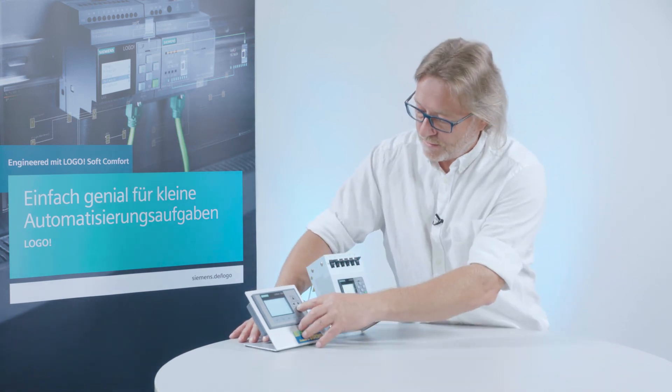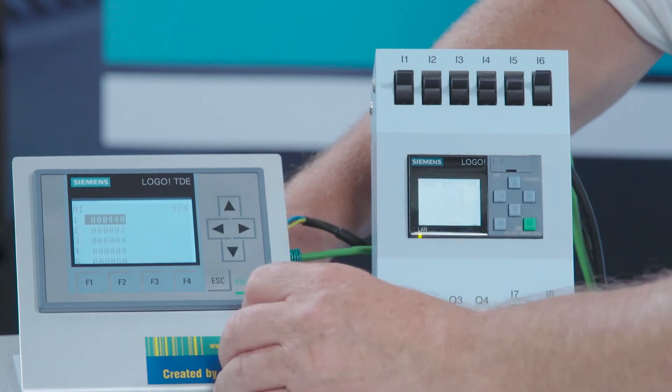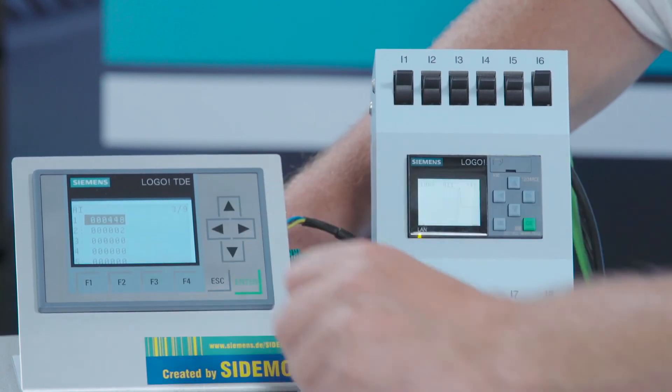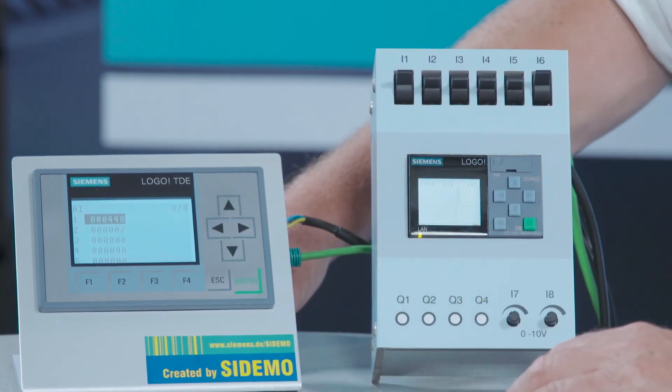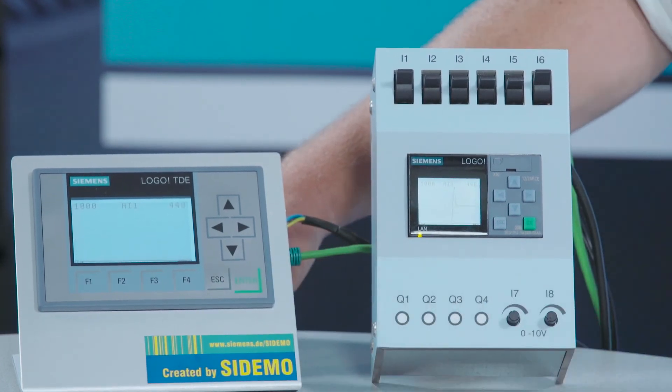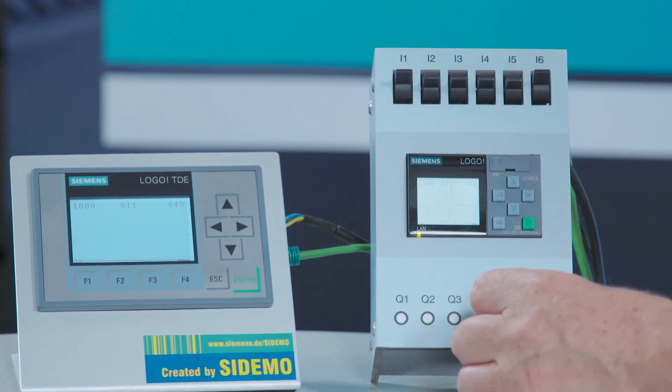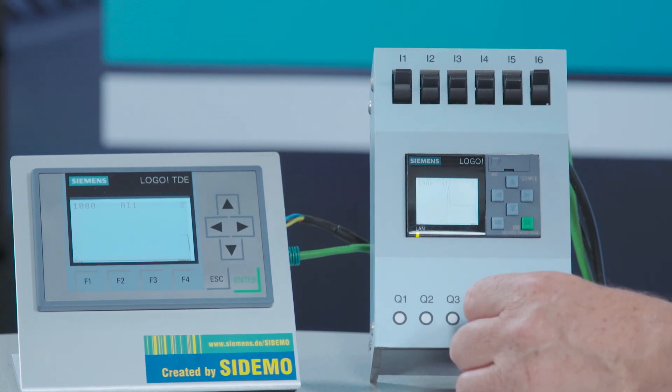Here too, I can switch to the relevant menu, use the arrow up and arrow down buttons to select the value I want to monitor and press enter to see the value as a trend view on the TDE as well.